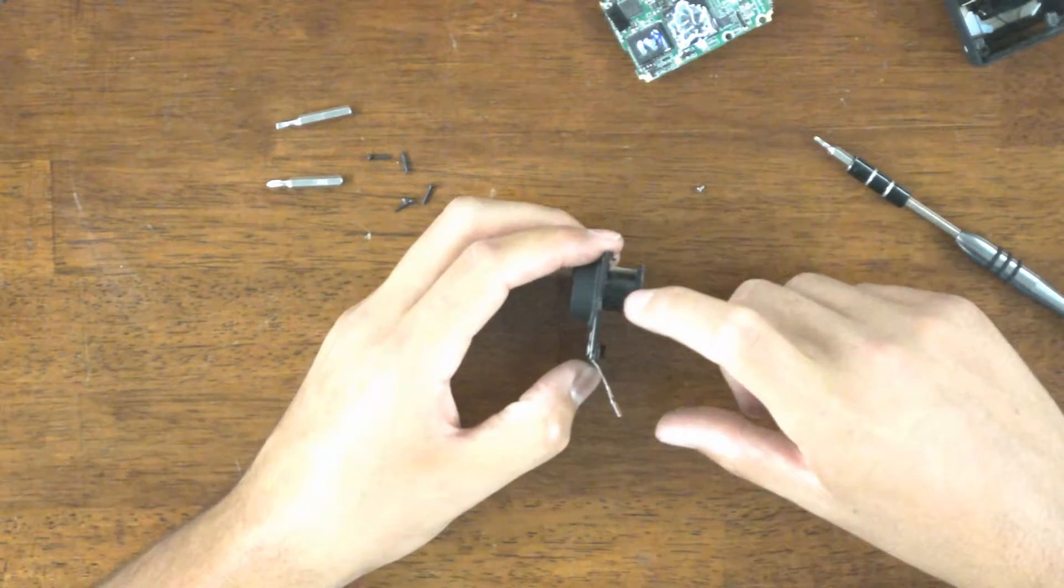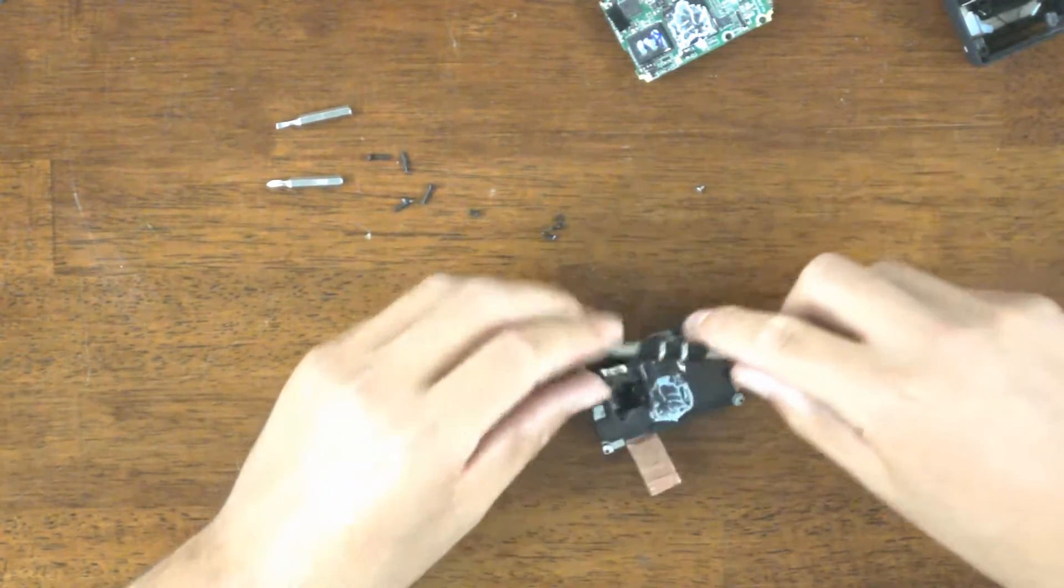This is the lens mount. Stock here, three black lens mount. Three more Phillips screws and we've got it out.